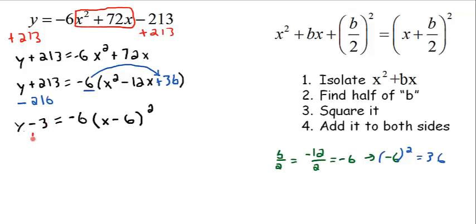Let's get rid of this -3 by adding it to both sides. Our answer will be y = -6(x - 6)² + 3. And that's the final answer.